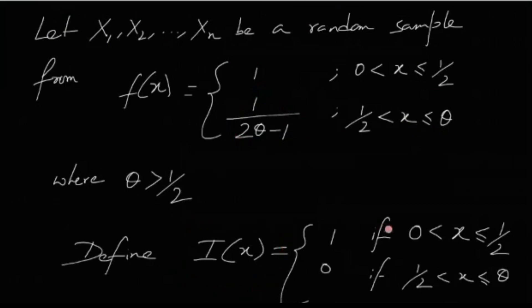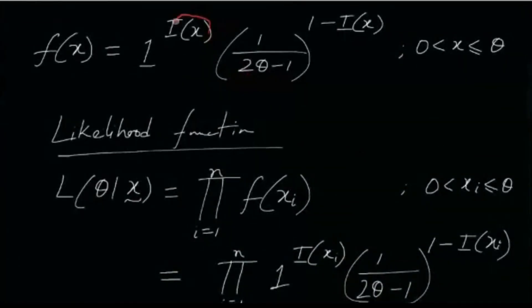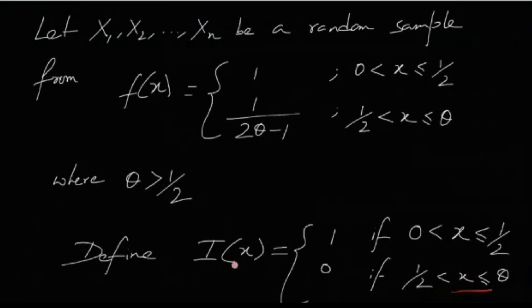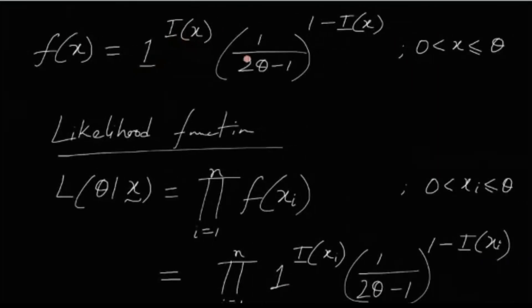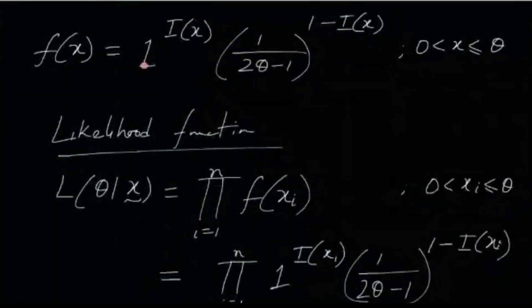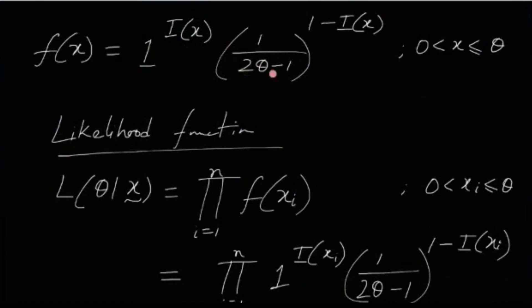To verify: if x lies between 0 and 1/2, then i(x) = 1 and 1 − i(x) = 0, so f(x) = 1, which matches. If x lies between 1/2 and θ, then i(x) = 0, so f(x) = (1/(2θ − 1))^1 = 1/(2θ − 1), which is also correct. So f(x) is combined as 1^(i(x)) × (1/(2θ − 1))^(1 − i(x)) for x between 0 and θ.